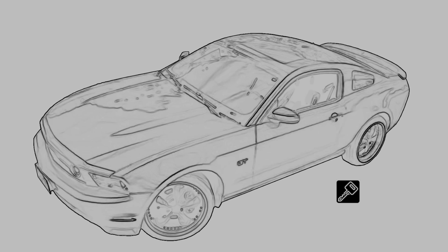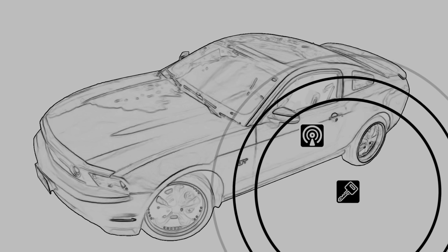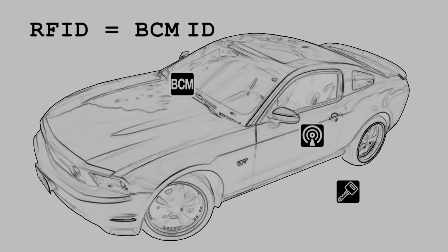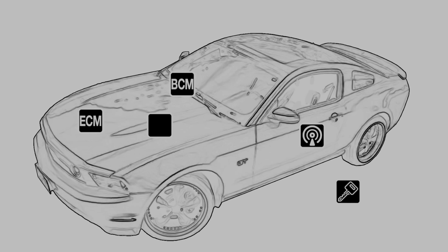In another example, a key fob transmits an RFID signal, which is picked up by a receiver, which broadcasts this event. The body control module gets the signal and compares the radio frequency identification to the ID it has in memory. If they match, it broadcasts over the CAN bus that the key is validated. The engine control unit hears this and deactivates the immobilizer. The door lock actuator also hears the signal and unlocks the door.